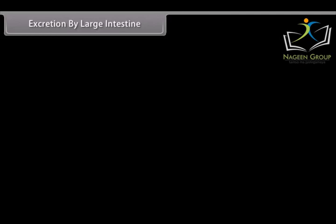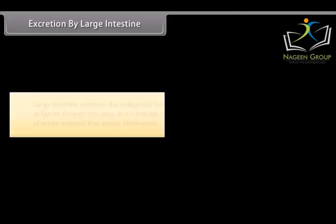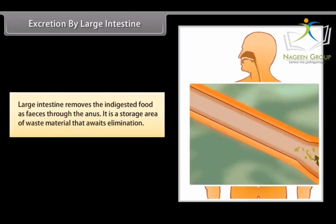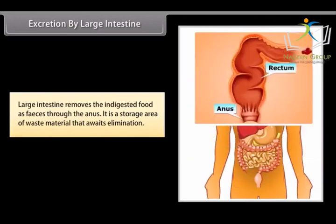Excretion by large intestine: The large intestine removes undigested food as feces through the anus. It is a storage area of waste material that awaits its elimination.